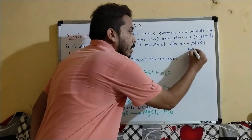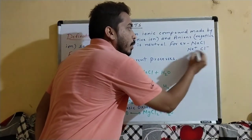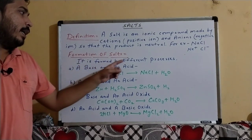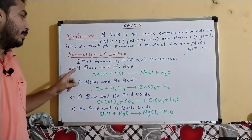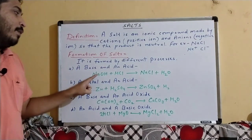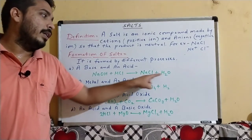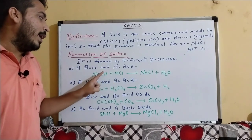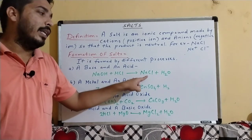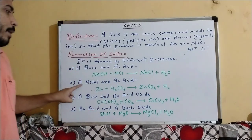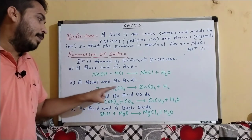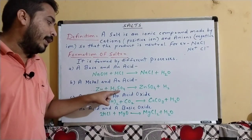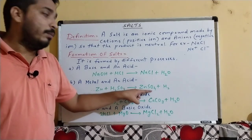When any base reacts with acid, it produces salt plus water. For example, sodium hydroxide reacting with HCl gives NaCl plus H2O. Next, when any metal reacts with acid, it produces salt plus hydrogen gas.